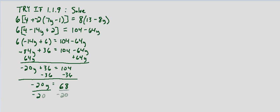We end up with negative 20y equals, and then 104 minus 36 is 68. And then dividing both sides by negative 20, we end up with y equals negative 68 twentieths, which if we simplify is going to equal negative 17 fifths. And I just divided both of them by 4. 17 times 4 is 68, 5 times 4 is 20. So as always we want to check our solution.